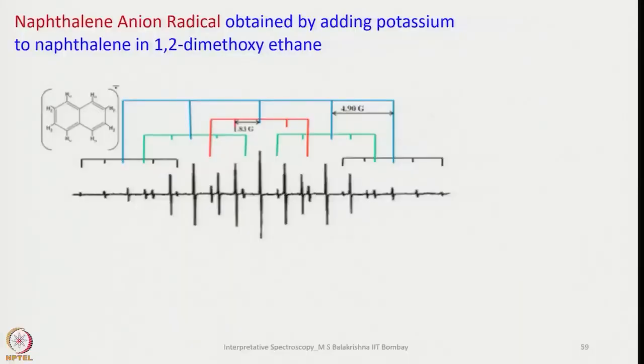This is about naphthalene anion radical. It's very easy to prepare. You take naphthalene in very dry, freshly distilled 1,2-dimethoxyethane and add sodium or potassium. You immediately generate potassium or sodium salts of naphthalate. The blue color is due to the formation of the radical. The EPR spectrum shows initially 1, 2, 3, 4, 5 lines, and then these 5 lines are further split into 5 lines.